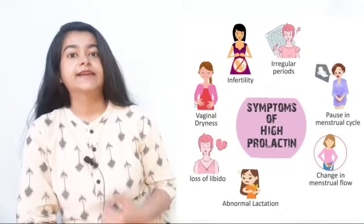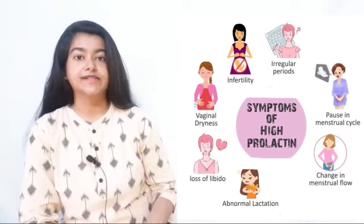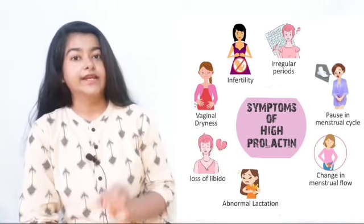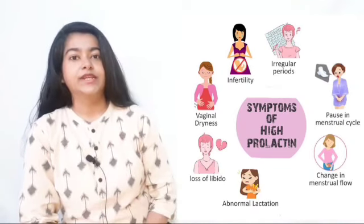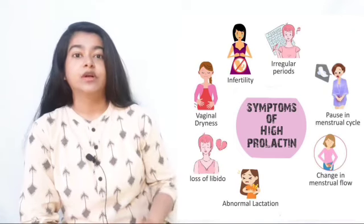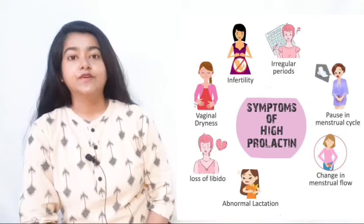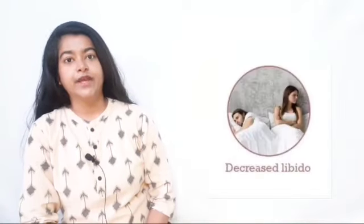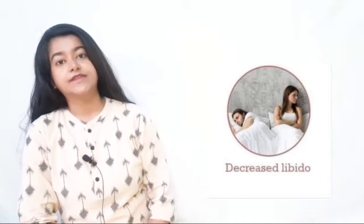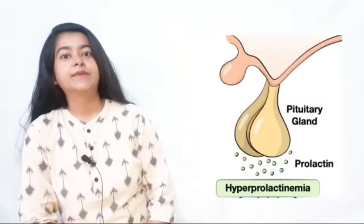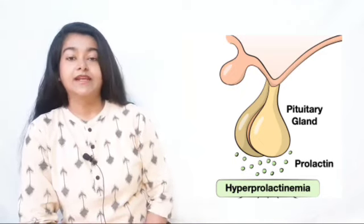Higher prolactin causes many problems: the menstrual cycle becomes irregular in females, and in many cases there is complete absence of menstruation. Secondly, spontaneous galactorrhea — milk discharge from the nipples in either males or females — which is undesirable. Third is infertility or in some cases sterility. Fourth is erectile dysfunction or impotency. Fifth is loss of libido, causing anxiety and stress in couples.